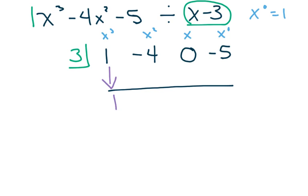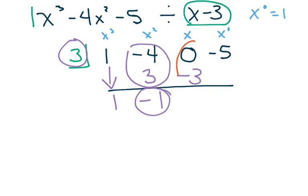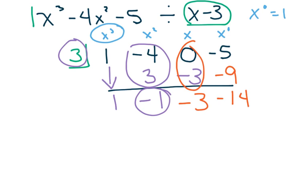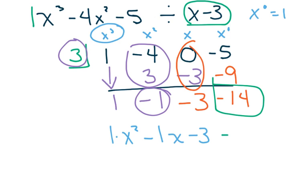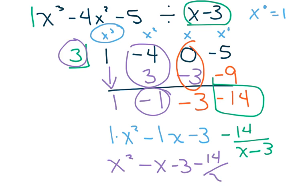Bring down the first term, and you're ready to go. Let's try to go a little faster. 3 times 1 is 3; add these two and you get negative 1. Then 3 times negative 1 is negative 3; combine and you get negative 3. Then 3 times negative 3 is negative 9; combine and you get negative 14. When we rewrite the polynomial, we started with x cubed so go down one: this is 1 times x squared, minus 1 times x, minus 3. The last number is the remainder, so we write minus 14 over x minus 3. Cleaning up: x squared minus x minus 3, minus 14 over x minus 3.